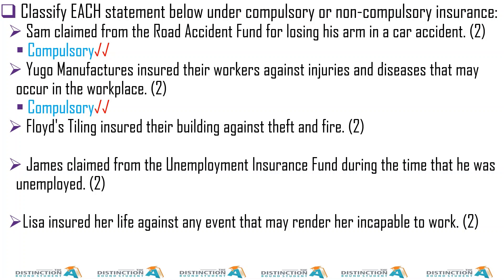Manufacturers insured their workers against injuries and diseases that may occur in the workplace — this happens to be compulsory. This would be COIDA — the Compensation of Occupational Injuries and Diseases Act.